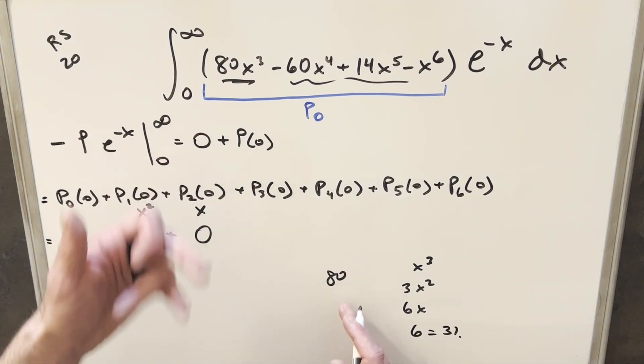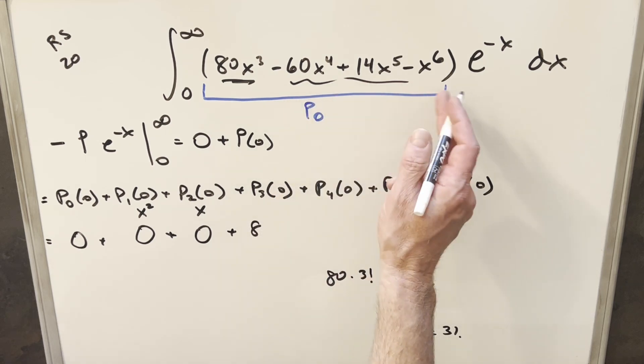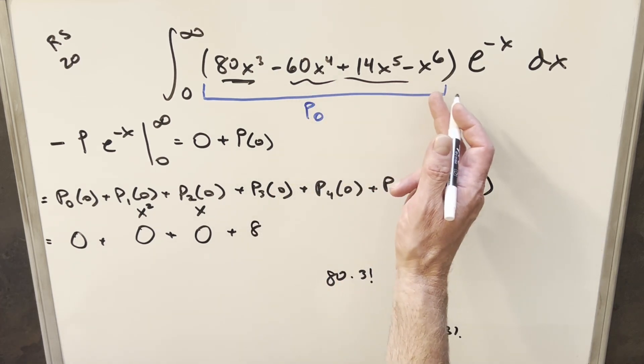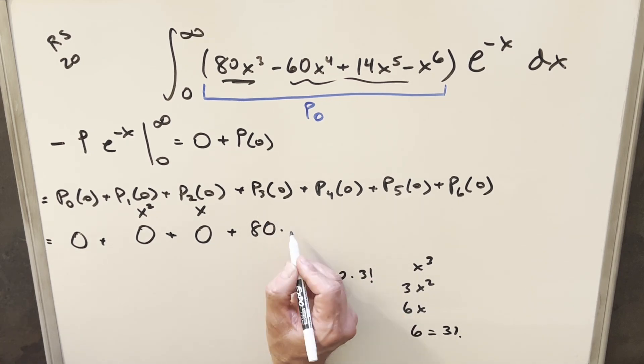But the thing really to notice here is six is going to just be 3 factorial. So what we can do for the third derivative is write this as 80 times 3 factorial. And actually I can put this in here because notice all the other terms are still going to be going to zero. There's going to be an x left. So you plug a zero in, all that stuff is going to be zeroed out. And for our P₃ term, we're just left with 80 times 3 factorial.